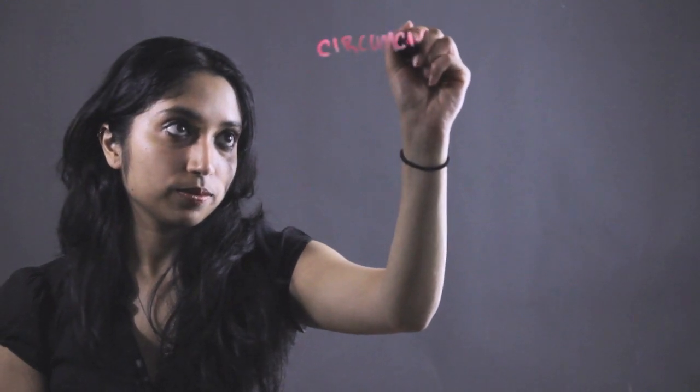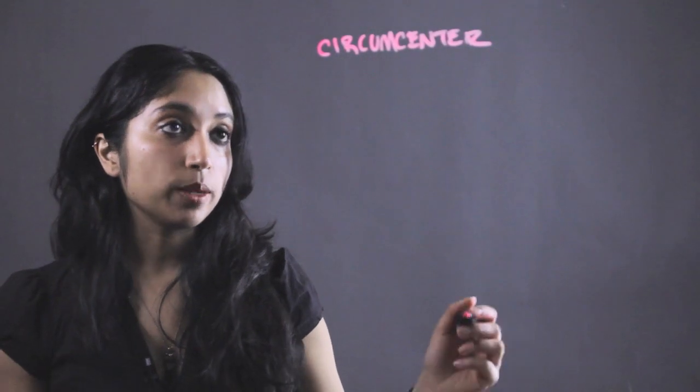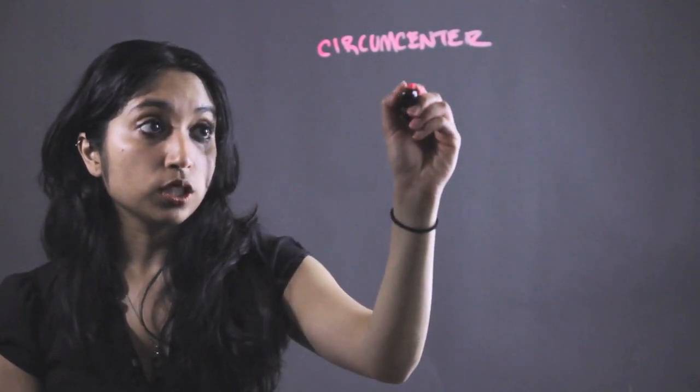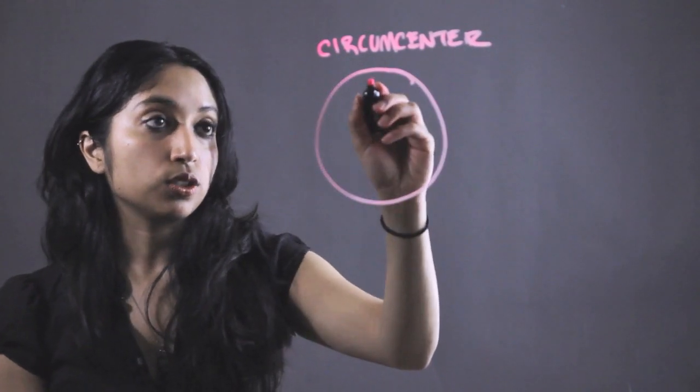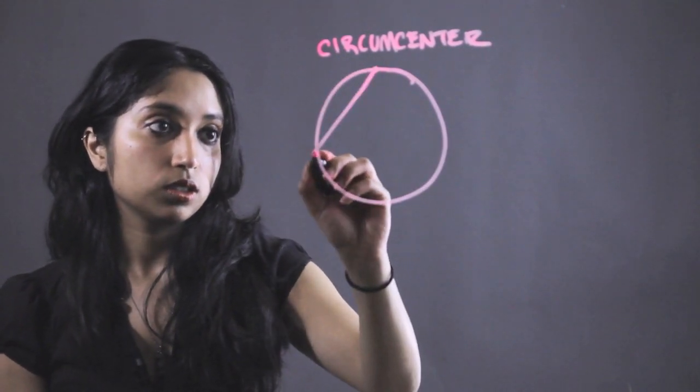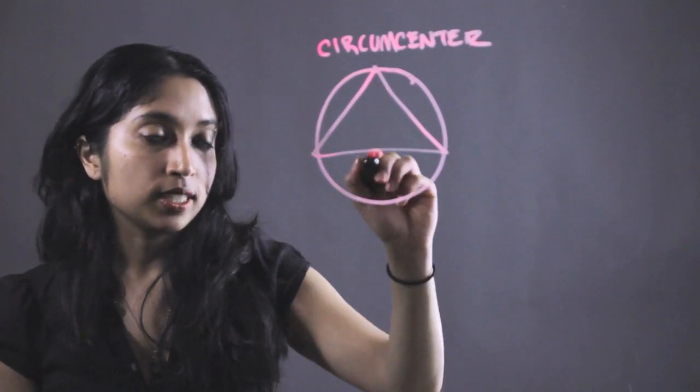So let's start with the circumcenter. This is going to describe a situation where we have a circle, and inside of that circle we have a triangle, or a circumscribed triangle that's inside of it.